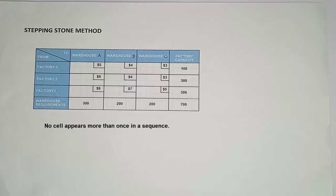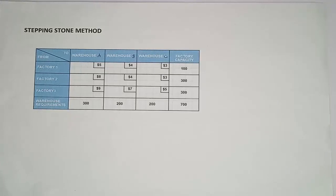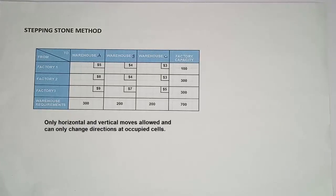Third, the first and last cells of the sequence lie in the same row or column. Fourth, no cell appears more than once in a sequence — there are no duplications. And last, only horizontal and vertical moves are allowed, and direction can only change at occupied cells.